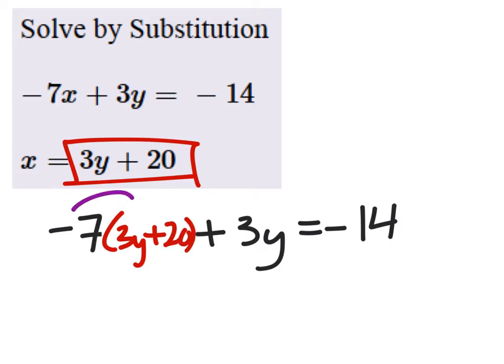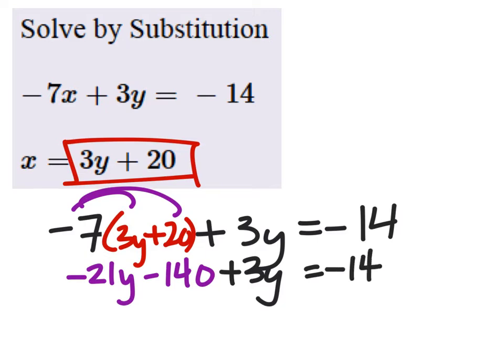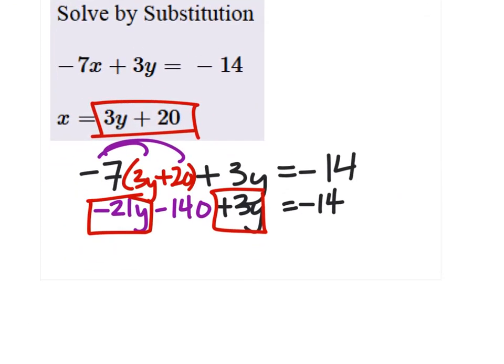Now I need to distribute that negative 7 into the parentheses, giving us negative 21y minus 140 and I still have that plus 3y equals negative 14. Now we can combine like terms. We've got this negative 21y and this positive 3y. So let's go ahead and combine those. Negative 18y.